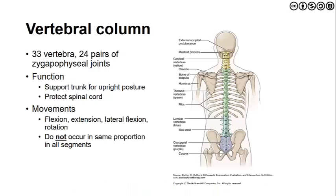The vertebral column has 33 named vertebrae extending from the cervical spine all the way to the sacral spine. This includes 24 pairs of zygo-apophyseal or facet joints. The function of the vertebral column is to support the trunk for upright posture, keep us upright, and provide a hard protective barrier for the spinal cord as it lies within the central canal.